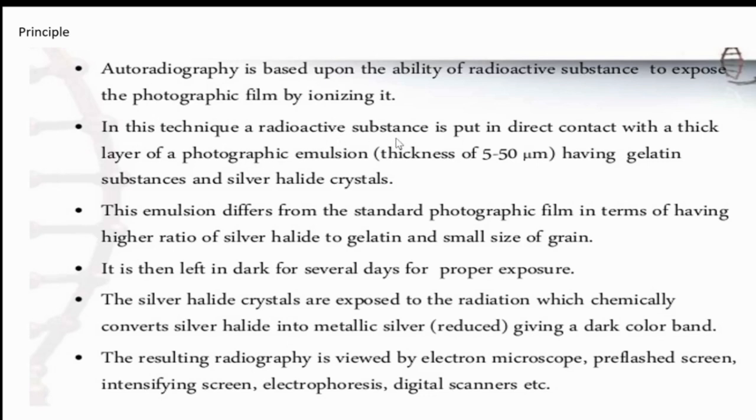In this technique, the radioactive substance is put in direct contact with a thick layer of photographic emulsion. Emulsion means simply a colloid-like mixture, a solution. And that solution, the emulsion, is composed of a gelatin substance and silver halide crystals. This photographic emulsion is to some extent different from that emulsion used in standard photographic film. In standard photographic film, the ratio of silver halide to gelatin is higher and also the size of the grain of silver halide is small.